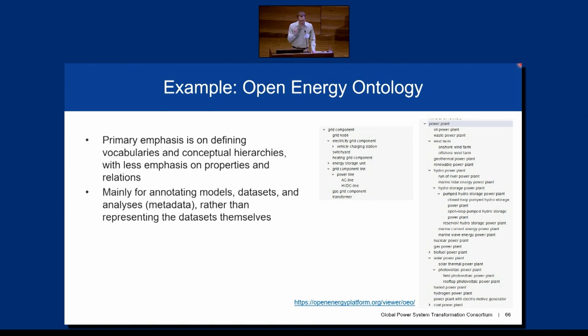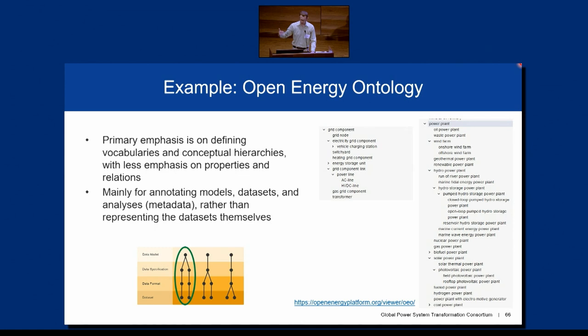CIM has this nice abstract ontology that you can then implement in different ways, although in practice there are also serialization standards defined by the IEC, and in practice those are the standards that a lot of people actually end up implementing in their specific software tools. Another example that's kind of on the opposite end of the spectrum from CIM when it comes to granularity of representation is the Open Energy Ontology, which is really not a data ontology so much as a metadata ontology — it's about annotating data sets with descriptors or tags about what this data set is about, defining a hierarchy of vocabularies about increasingly detailed aspects of basically nouns in your relational schema, but not so focused on how you represent relationships between those nouns.